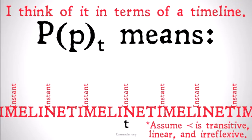So if you have the statement PPt, that means that at some point in the past from now, p was true. So PP is true at instant t, right now, and therefore at some instant in the past, p is true. It doesn't have to be that instant — it can be any of those instants in the past.